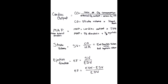What is the equation of cardiac output? The equation of cardiac output is the rate of oxygen consumption over the arterial oxygen content minus the venous oxygen content.